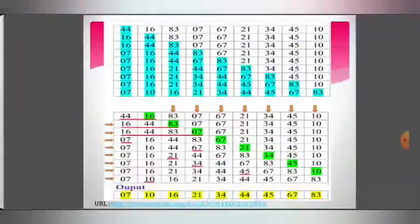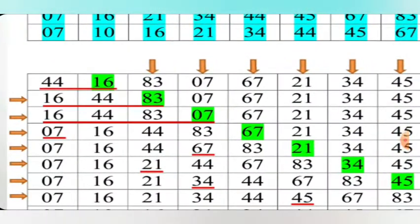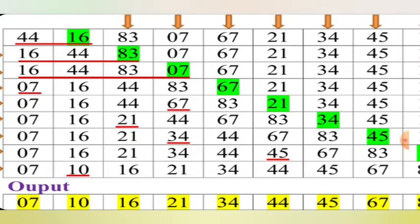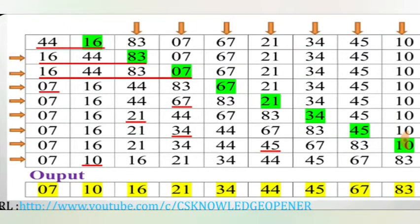In the first pass, we compare and change the order as needed. Next, we compare 53 to the sorted array list: 53 is greater than 44, so no change. Then we compare 7: 7 is less, so we insert it at the first position. Then 67: it is greater than 44 and less than 83, so we insert it in its correct position. We now have: 7, 16, 44, 67, 83.